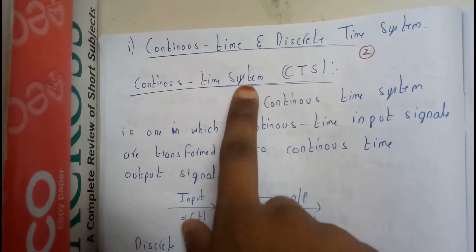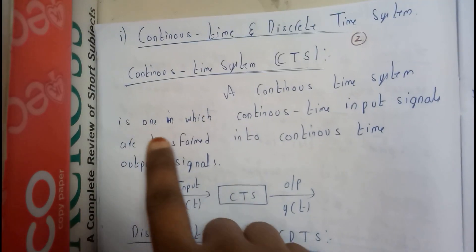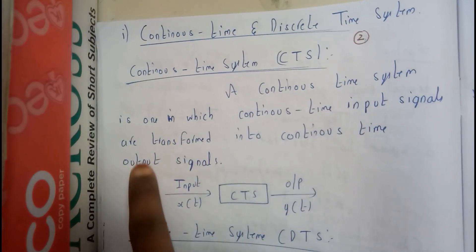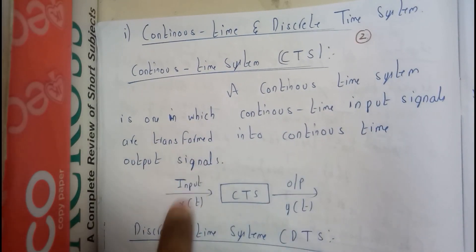What is continuous time system? A continuous time system is one in which continuous time input signals are transferred into continuous time output signals.